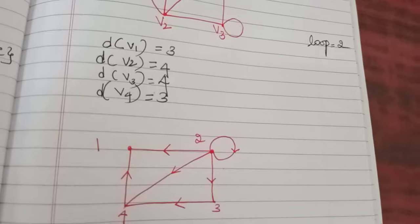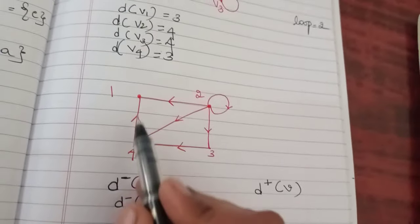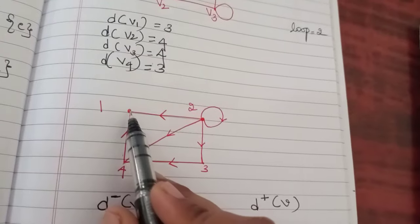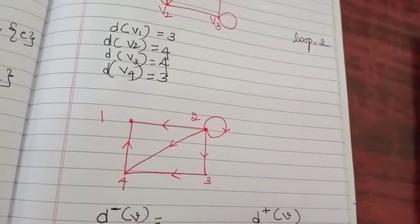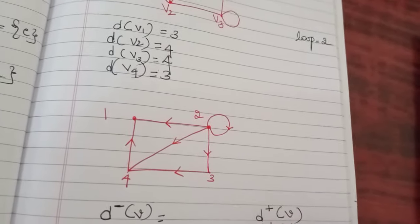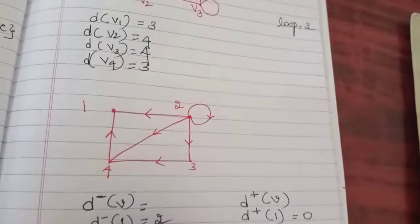In-degree for one: from four to one, one edge; from two to one, one edge. So two. Out-degree of one is zero. See here, nothing is going out of one.